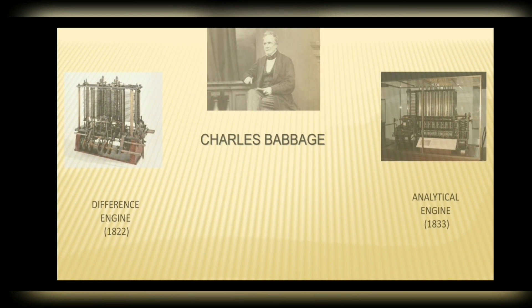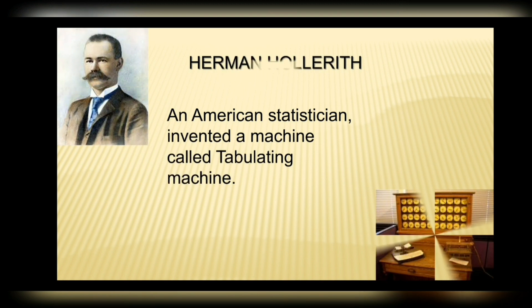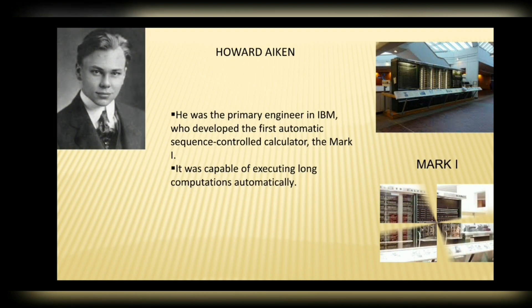Number five: Charles Babbage, father of the computer, invented the Difference Engine in 1822 and the Analytical Engine in 1833. Number six: Hermann Hollerith, an American statistician, invented the Tabulating Machine. Number seven: Howard Aiken was the primary engineer at IBM who developed the first Automatic Sequence Controlled Calculator — the Mark I — capable of executing long computations automatically.